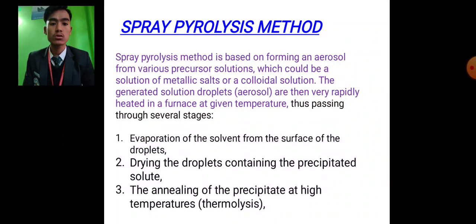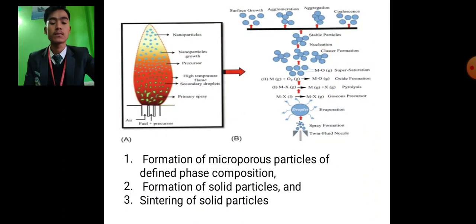The generated solution droplets are very rapidly heated in a furnace at a given temperature, thus pursuing several stages. First stage is evaporation of the solvent from the surface of the droplet. Second, drying the droplet containing the precipitated solute. Third is the annealing of the precipitate at high temperature thermolysis. Fourth one is formation of microporous particle of defined phase composition and formation of solid particle. And last one is sintering of solid particles.